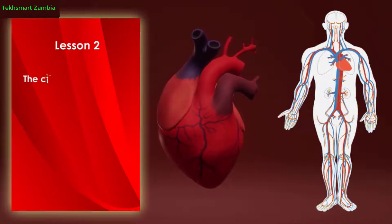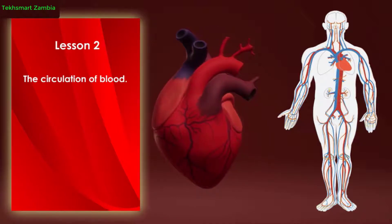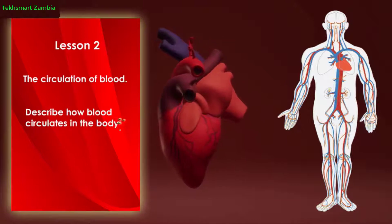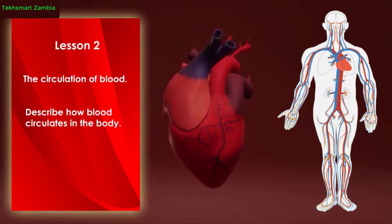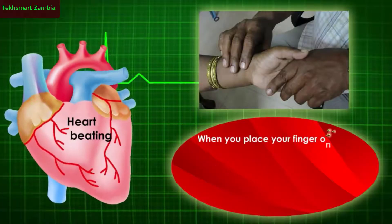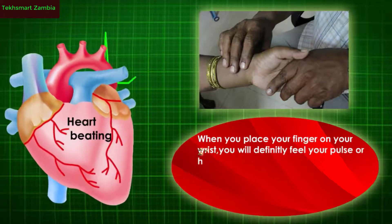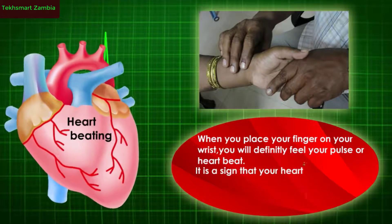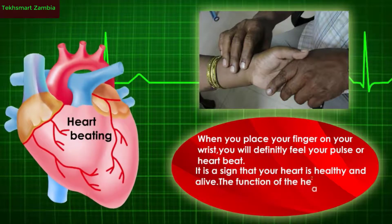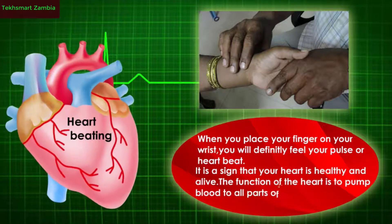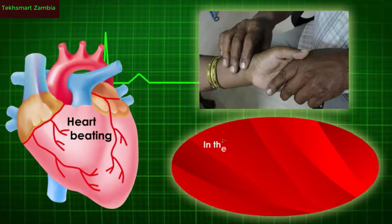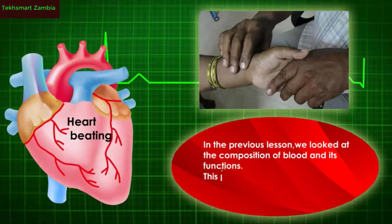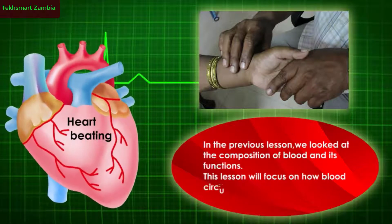Lesson two: the circulation of blood. By the end of this lesson, you should be able to describe how blood circulates in the body. When you place your finger on your wrist, you will definitely feel your pulse or heartbeat — it is a sign that your heart is healthy and alive. The function of the heart is to pump blood to all parts of the body. This lesson will focus on how blood circulates in our bodies.